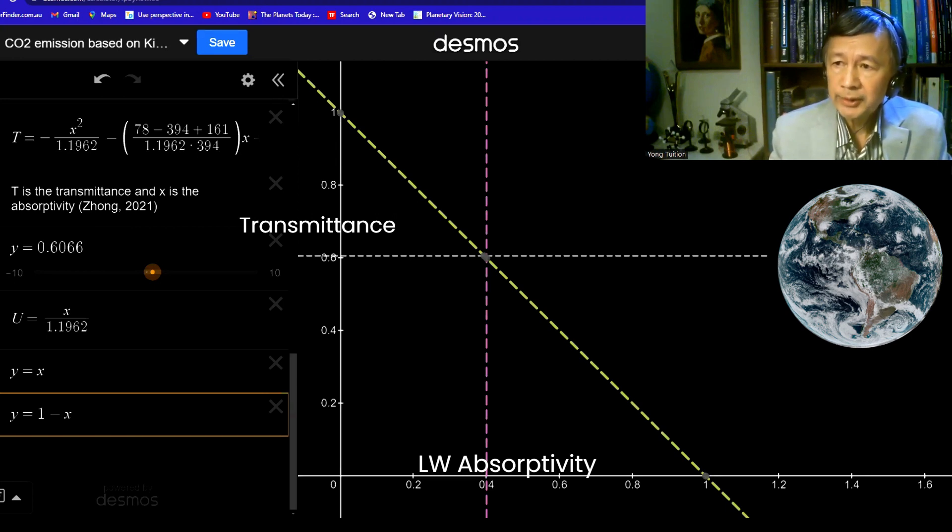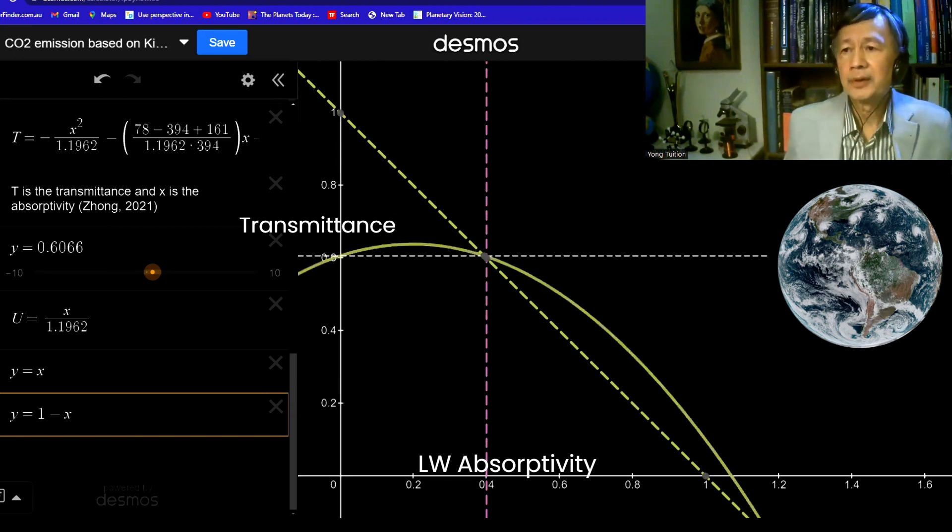However, according to my theoretical studies, the dependence of the transmittance of our atmosphere on the absorptivity is parabolic. It's quadratic.